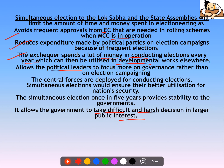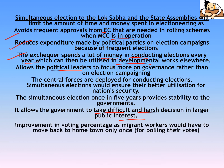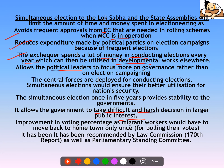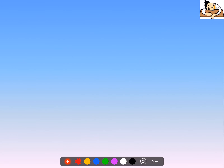Currently, if there is a state election, the central government tends to avoid difficult decisions for fear of losing in that state. With simultaneous elections, voting percentages will also improve, as migrants won't need to travel back separately — once for Lok Sabha and once for state assembly elections.